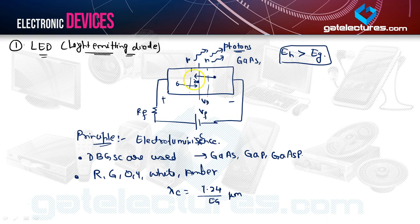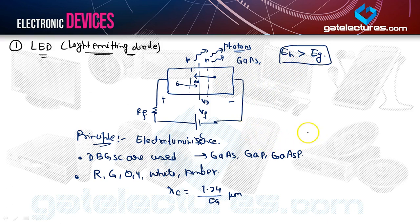Do not say the energy is released in the form of heat. Heat basically corresponds to the release of phonons, and for that we use element-type semiconductors. Element-type semiconductors release heat, which corresponds to phonons, while photons are released by the light emitting diode — gallium arsenide, gallium arsenide phosphide, or gallium phosphide.